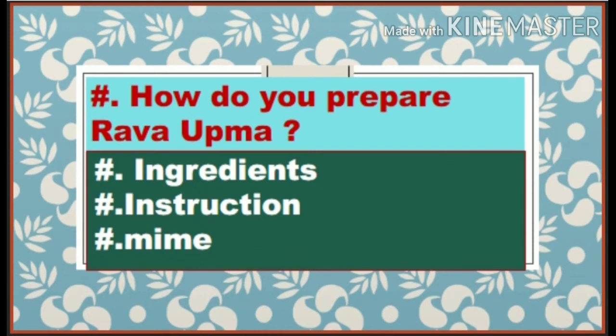Now you have understood how bees make honey. Here is an activity: prepare Rava Upma. Do you like Rava Upma? Three of you come in front of the class — one should read the ingredients, another should read the instructions on how to make it, and the third one should mime or show through action.